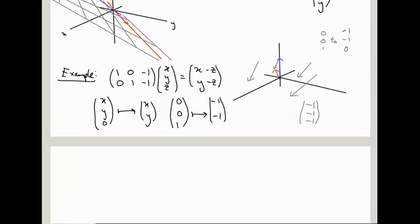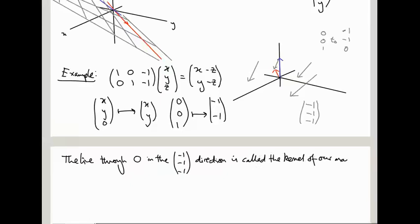So this direction, this line minus 1, minus 1, minus 1 has a name. We'll come to this later in the course. It's called the kernel of the matrix. So the line through the origin in the minus 1, minus 1, minus 1 direction is called the kernel of our matrix. It's the line of stuff that gets squished to the origin. So it's like the direction in which our raindrops are falling if we're projecting along the rain. In fact maybe it's better to think of it as light rays because then the word projection really makes sense. You're projecting like a projector in a cinema. You're projecting along light rays.